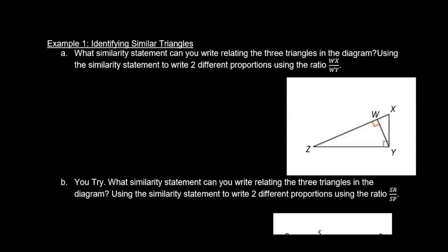Here we are asked: what similarity statement can we write relating the three triangles in this diagram? Starting at the top right, we go X, Y, Z. So down the short, then the long — that would be similar to X, W, Y, which is going to be similar to Y, W, Z.